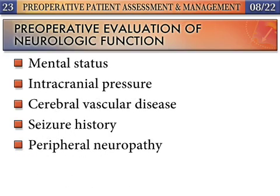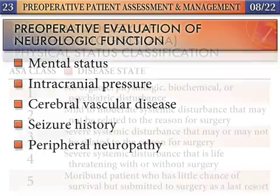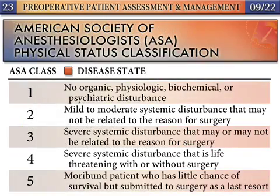Evaluation of the patient's neurologic system is based on the ability to answer health history questions, which essentially confirms a normal mental status. At the conclusion of the history and physical examination, the anesthesiologist typically assigns the patient to an American Society of Anesthesiologists' physical status classification.